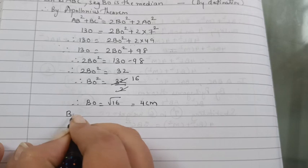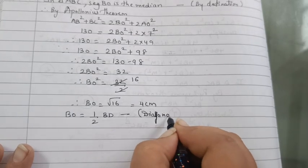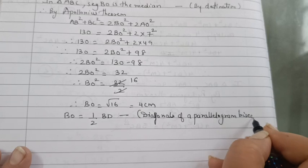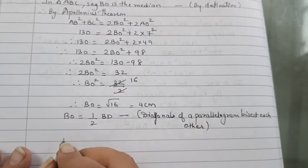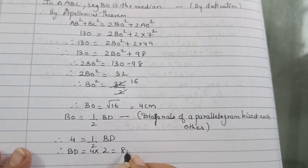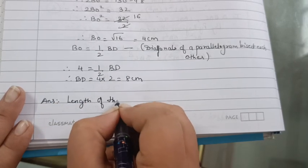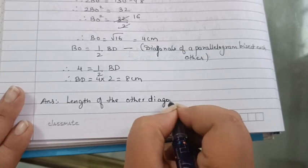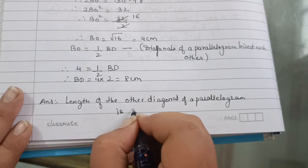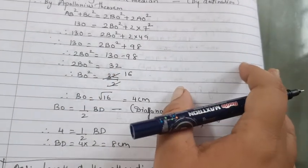So BO is equal to half of BD. Again here you will write diagonals of a parallelogram bisect each other. So therefore 4 equal to half of BD. Therefore BD equal to 8 cm. So we will write in answer, length of the other diagonal of a parallelogram is 8 cm. It is not so hard. Let's go to question 13 now.